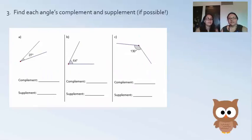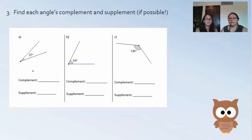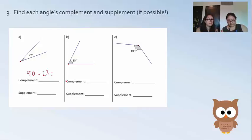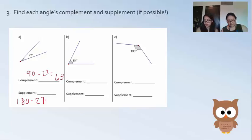Moving on to the next slide, we have: find each angle's complement and supplement if possible. We have an angle of 27 degrees. To find the complement, we do 90 minus 27, which equals 63. For the supplement, we do 180 minus 27, which equals 153.